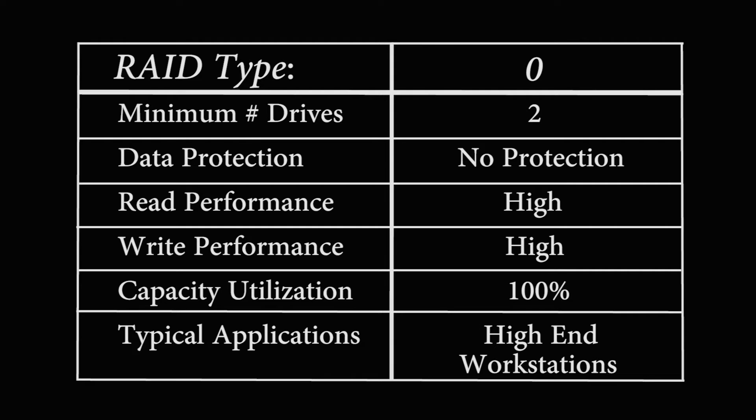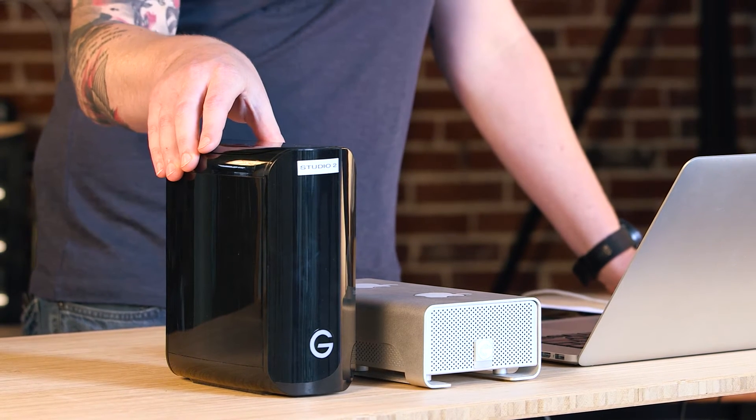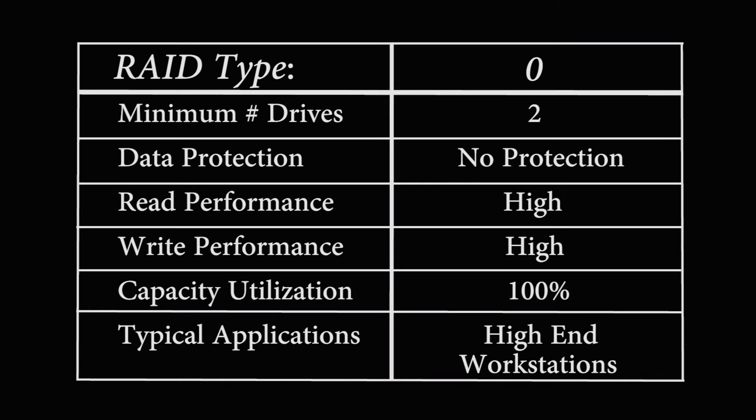You'll notice that capacity utilization is 100%. So if you have a RAID drive set to RAID 0 and it's a six terabyte drive, like the one you see here, you will have all six terabytes available. Typical applications that you would use RAID 0 with are higher-end workstations — you're going to see this in video editing, motion graphics, and computers doing a high degree of rendering.